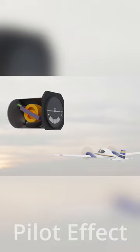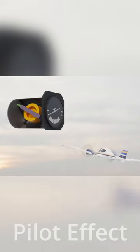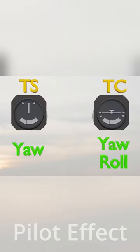Next, the turn coordinator. It's kind of the same except the gyroscope is mounted at a slight angle. So it still picks up yaw, but because of the way the gyroscope is mounted, it also picks up roll. So the turn and slip will indicate only yaw, but the turn coordinator will indicate both yaw and roll.